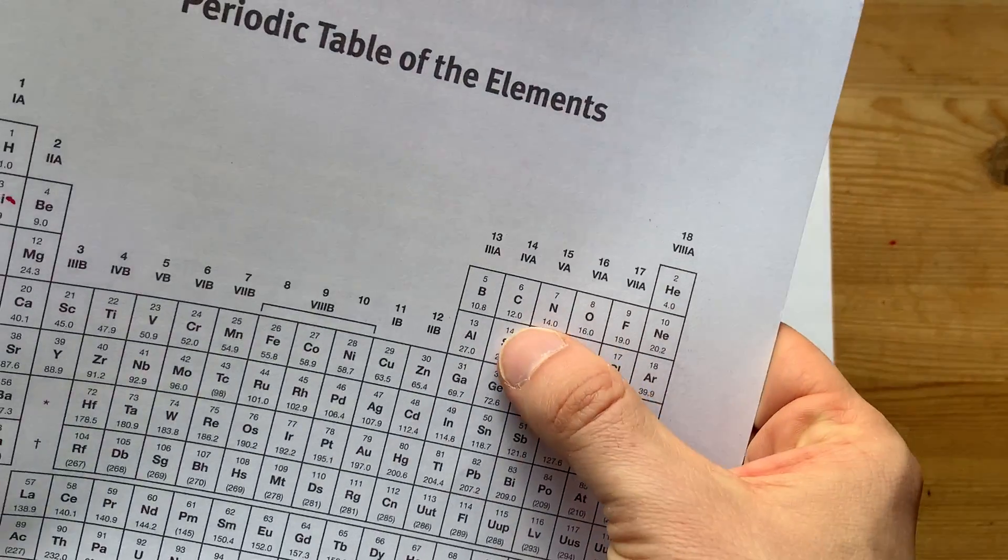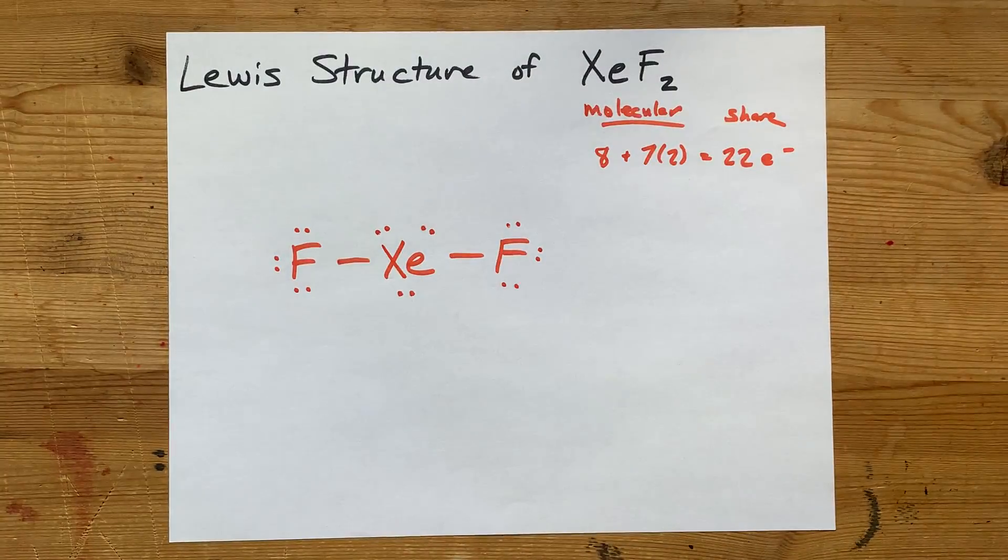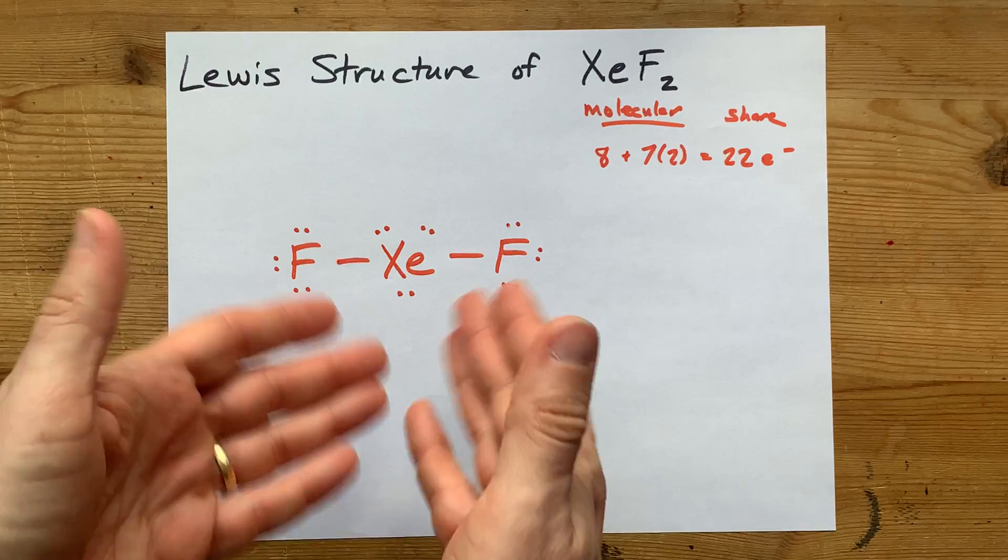But the octet rule really only applies to carbon, nitrogen, oxygen, and fluorine 100% of the time. So this is allowed.